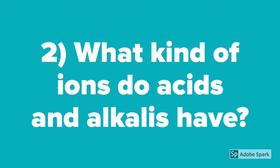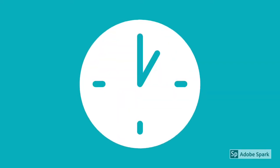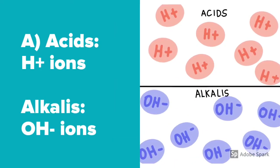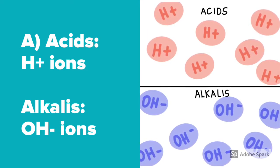Question number 2: What kind of ions do acids and alkalis have? Acids produce H plus ions, while alkalis produce OH minus ions.